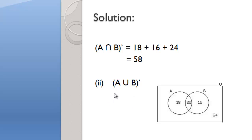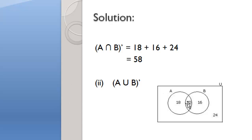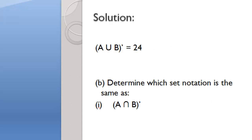Now Part 2 asks us to identify and sum A union B complement. A union B is everything inside of both sets, and the complement means everything outside of both sets. That value is 24. So the solution is A union B complement is equal to 24.